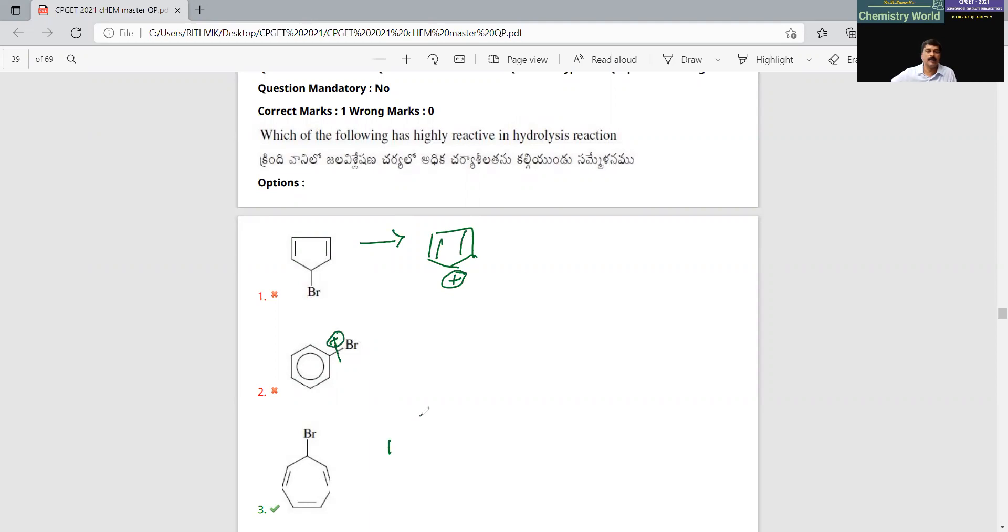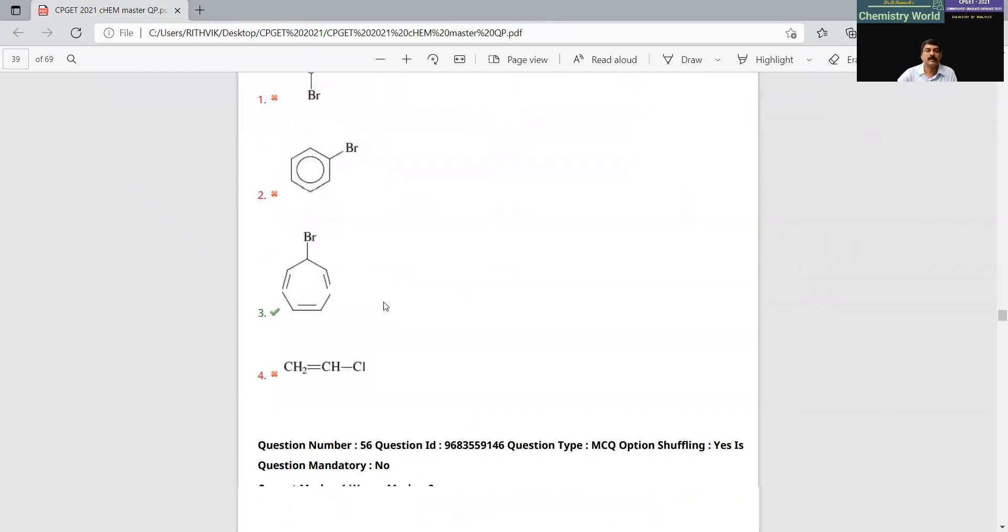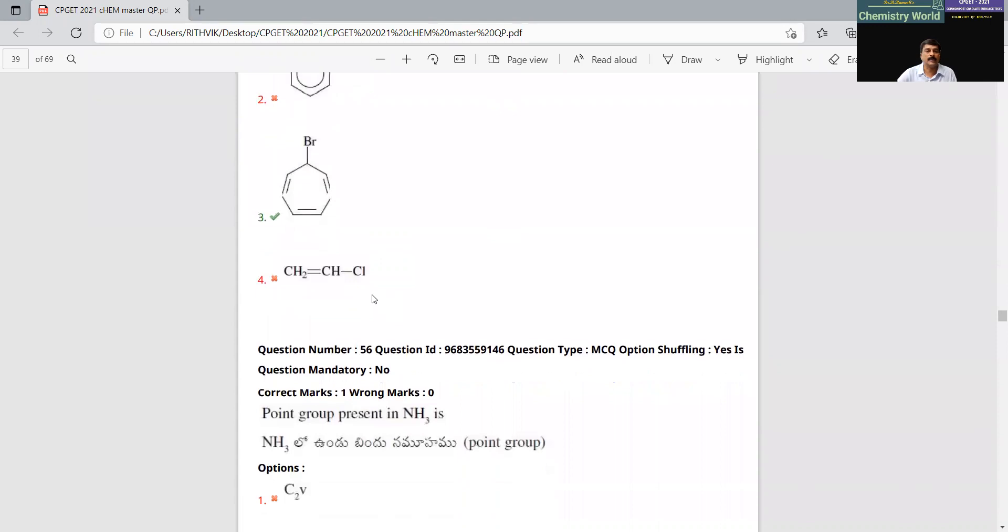Here, this is tropylium cation, which is aromatic, that prefers to be formed. Therefore, naturally, this could be the answer. The stability order will be aromatic greater than non-aromatic, which is further greater than anti-aromatic.